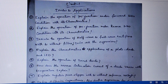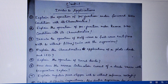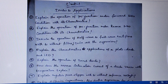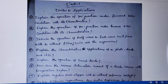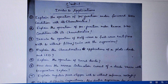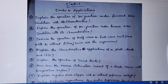The first question is explain the operation of P-N junction under forward bias condition with its characteristics. Second question is explain the operation of P-N junction under reverse bias condition with its characteristics. Third question is explain the operation of full wave rectifier and half wave rectifier with and without filters. Derive all the required expressions.